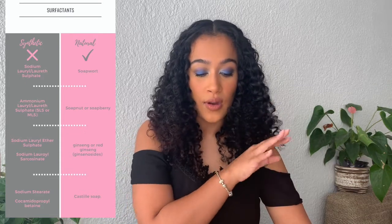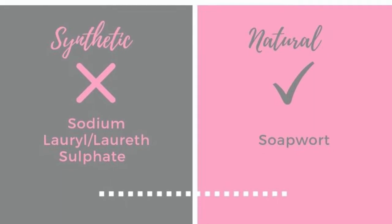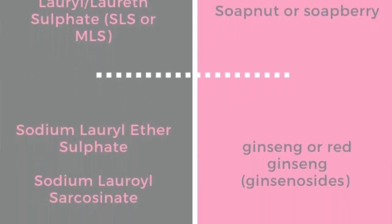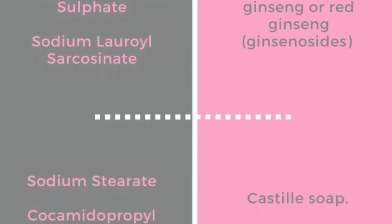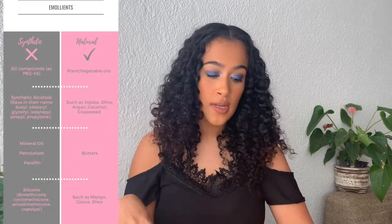Surfactants act as detergents, emulsifiers, and foaming agents and are mostly found in cleansers and shampoos, though some conditioners have them too. Synthetic surfactants are also known as sulfates. They have a negative reputation because they strip the hair of its natural oils — or sebum — which can lead to dry hair and cause skin irritation. Natural surfactants, on the other hand, are gentle cleansers that don't remove all the sebum and leave your hair feeling less dry. Basically you want to look for products that are sulfate-free.